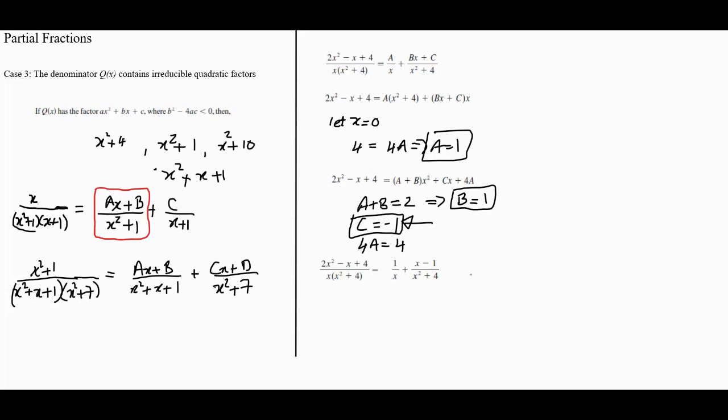The last case is case 4. Case 4 is where there are irreducible quadratic factors, some of which are repeated. Let me give you an example. If we had (2x + 1) divided by (x² + 3)³(x - 3), this is our repeated one here.